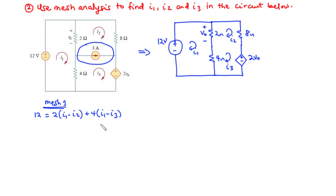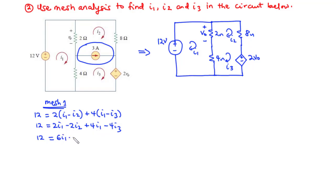Expanding and simplifying: 12 = 2I1 − 2I2 + 4I1 − 4I3, which gives 12 = 6I1 − 2I2 − 4I3. Dividing through by 2: 6 = 3I1 − I2 − 2I3. Let's call this Equation 1.